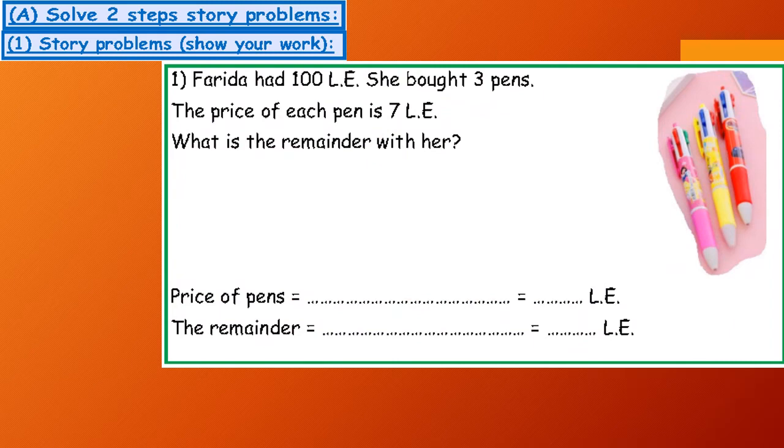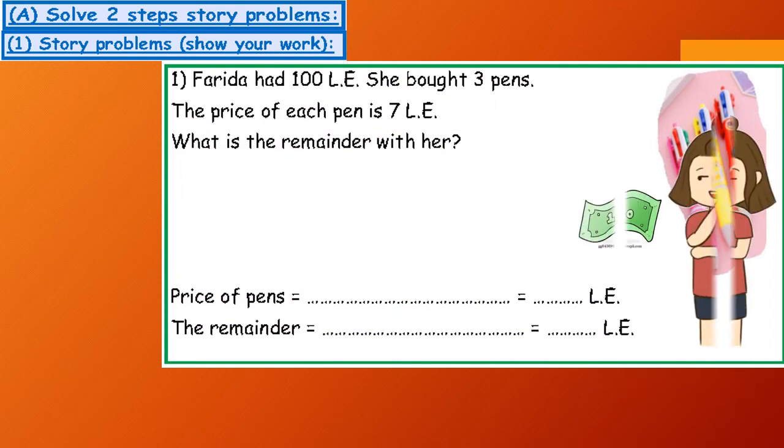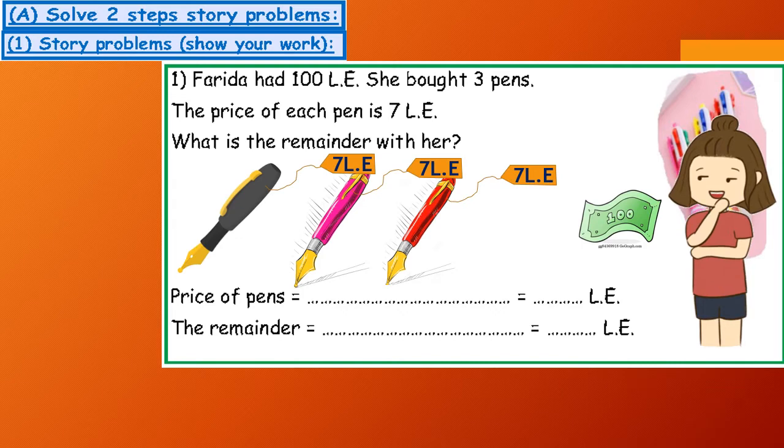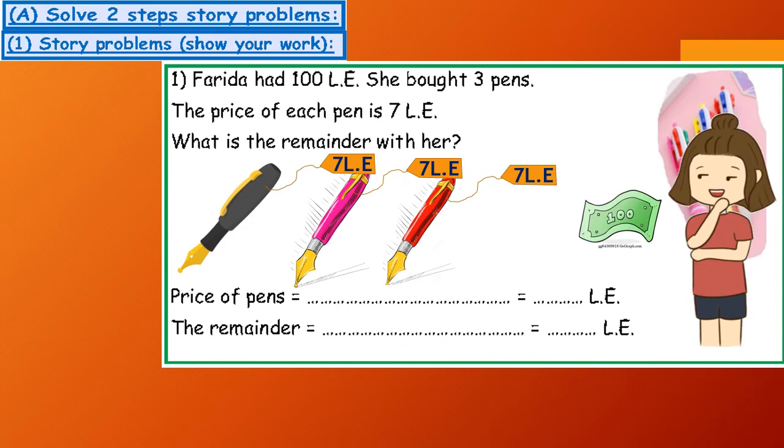Number one: Farida had £100. She bought three pens. The price of each pen is £7. What is the remainder with her?